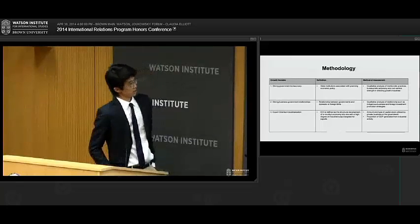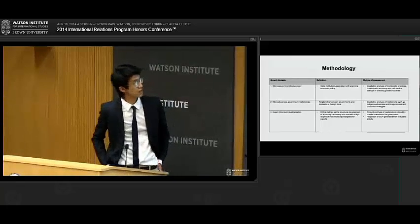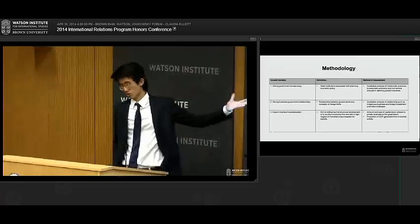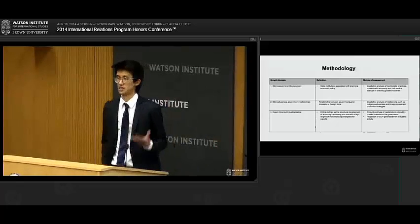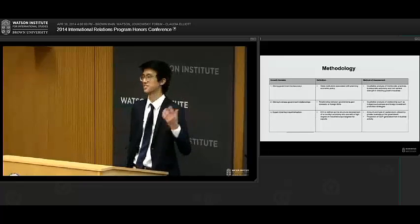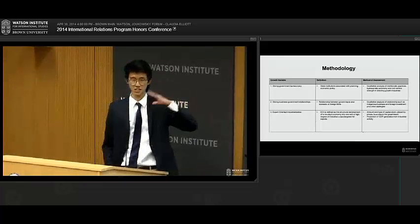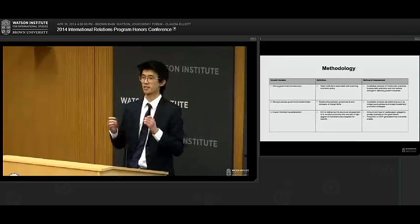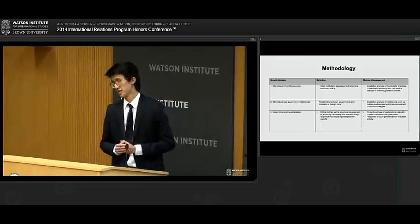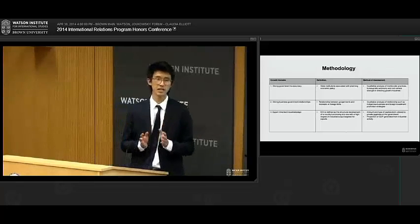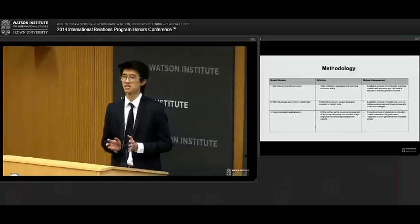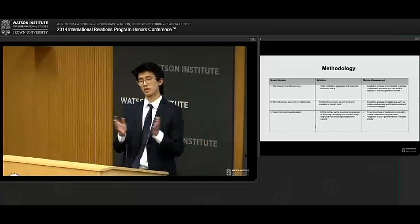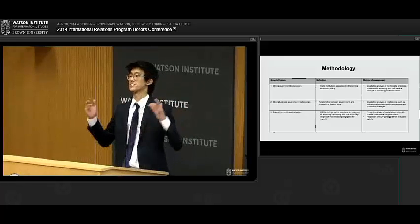So this is a bit more about my definitions and my methods of assessment for my three growth variables. But last night, as I was presenting to a friend, she told me, don't go all jargony. Please explain this to me in real-life terms that I can imagine. So strong government bureaucracy, imagine this with me: a group of Asian young men, very technocratic, very meritocratically selected, all in a room picking industries for a country to invest in.